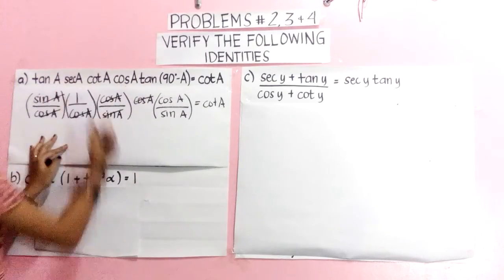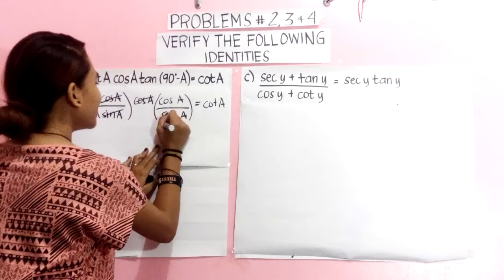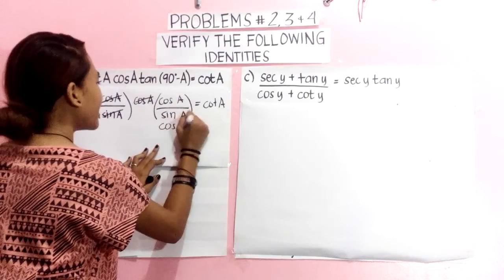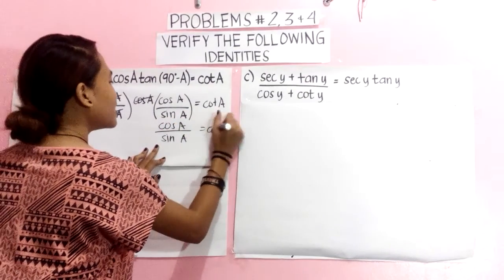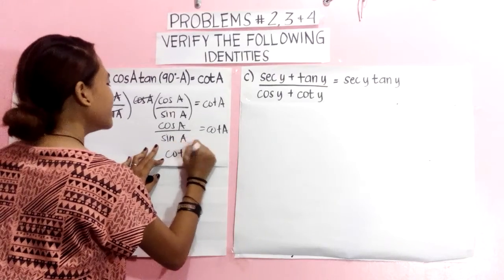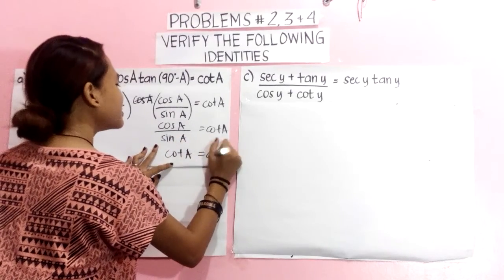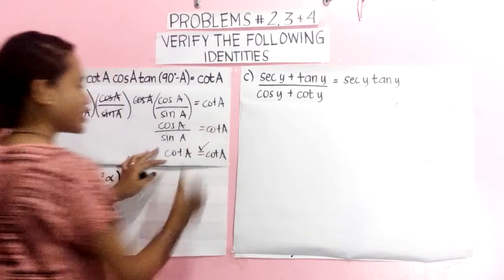What remains is cos A over sin A, which equals cos A and makes it correct.